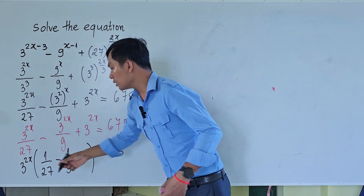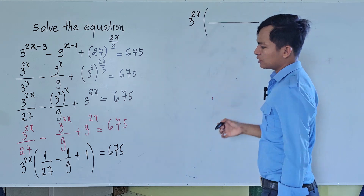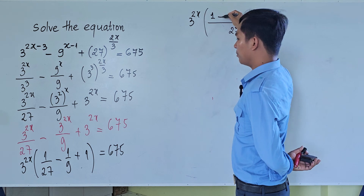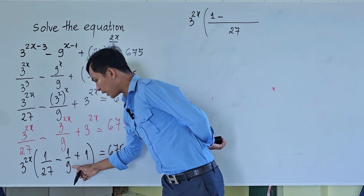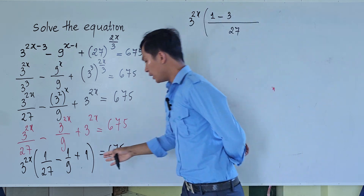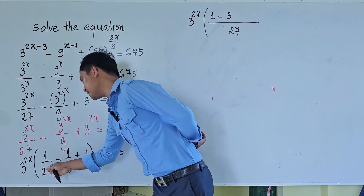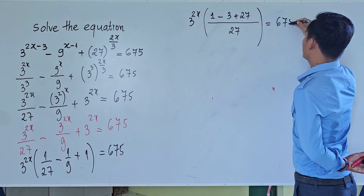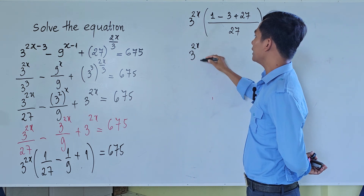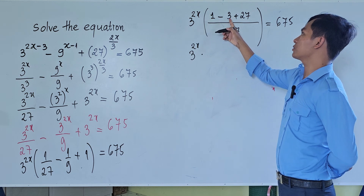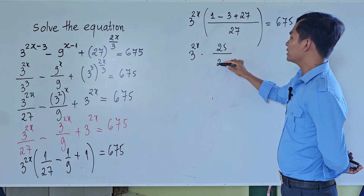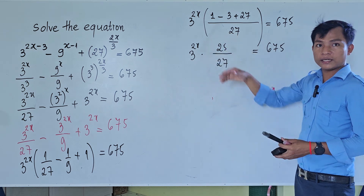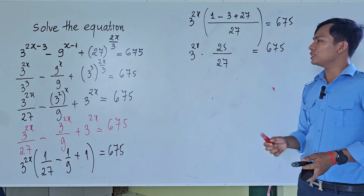Now we add the terms inside the bracket by taking the common denominator as 27. We get 3 to the power 2x times: in the numerator, 1 — and to get denominator 27 for the second term, we multiply 1 divided by 9 by 3, giving 3 — and for the last term, multiplying by 27, giving plus 27. So the numerator becomes 1 minus 3 plus 27, which is 25, over 27. This equals 675. To simplify, we multiply both sides by 27 and divide by 25.